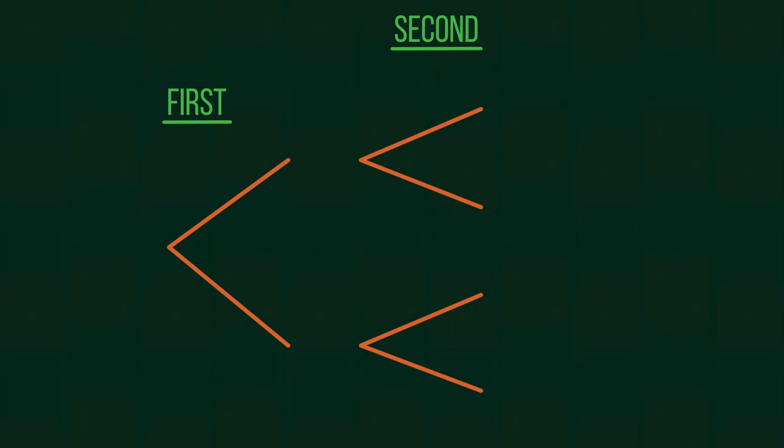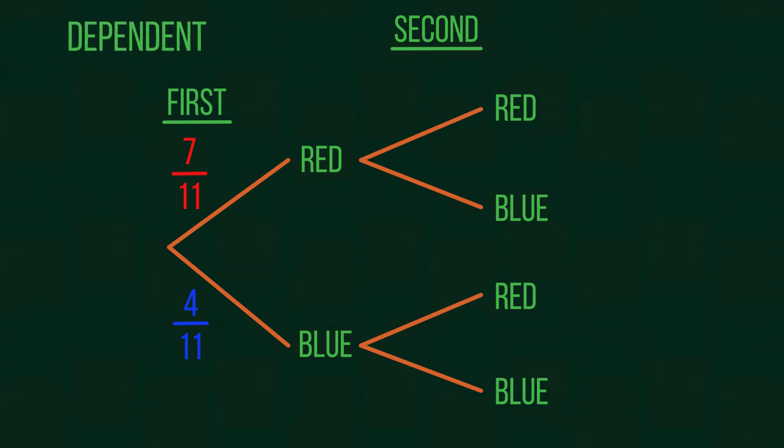To set up this question, we need a tree diagram and values to the branches. Our first stage of the tree diagram should look like this, with only the first values included. We now need to calculate the remaining values, remembering that they will change as these events are dependent.